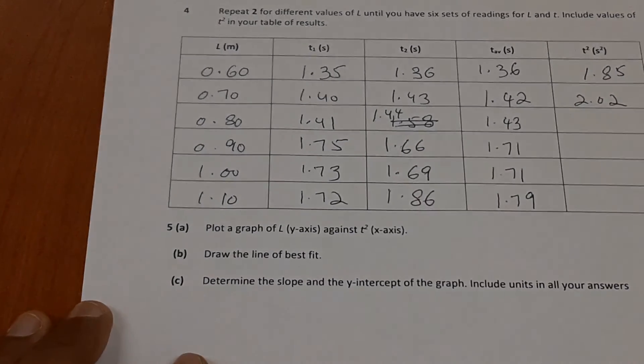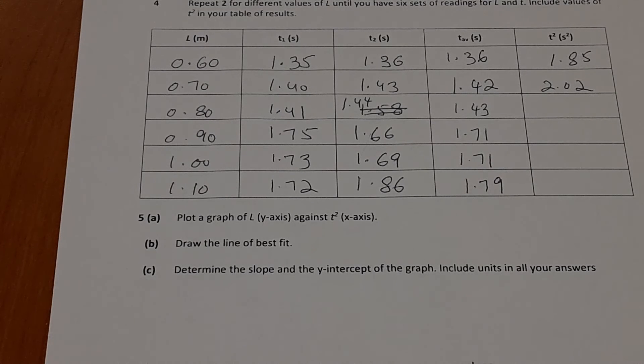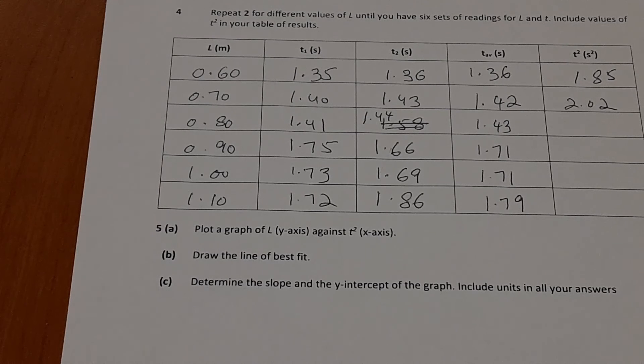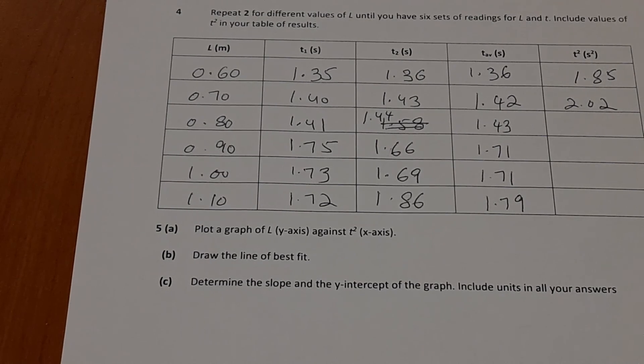So now what you can do is complete this table and go to Google Sheets, draw a graph of L versus t squared. L would be on the y-axis and t squared would be on the x-axis. Once you have your graph, then you can get the equation from the scatter plot, add a trend line, and then use that equation to complete the other parts of this lab. So I hope that you had a fun time doing this lab.